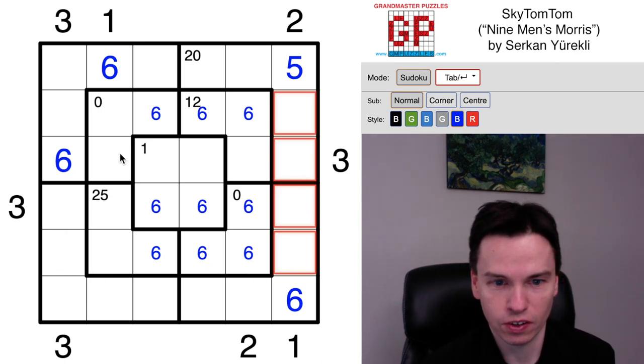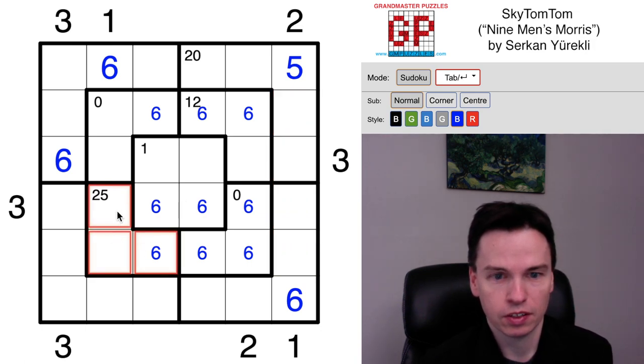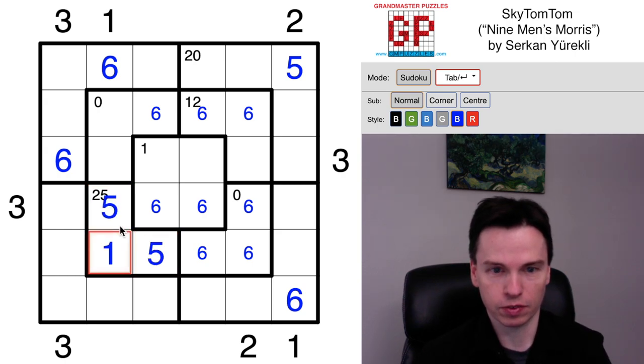I think that's all I can do with the skyscrapers for now, so we're going to swap back to Tom-Tom for a bit. 25 in three cells as a product, and that will have two fives with a one.